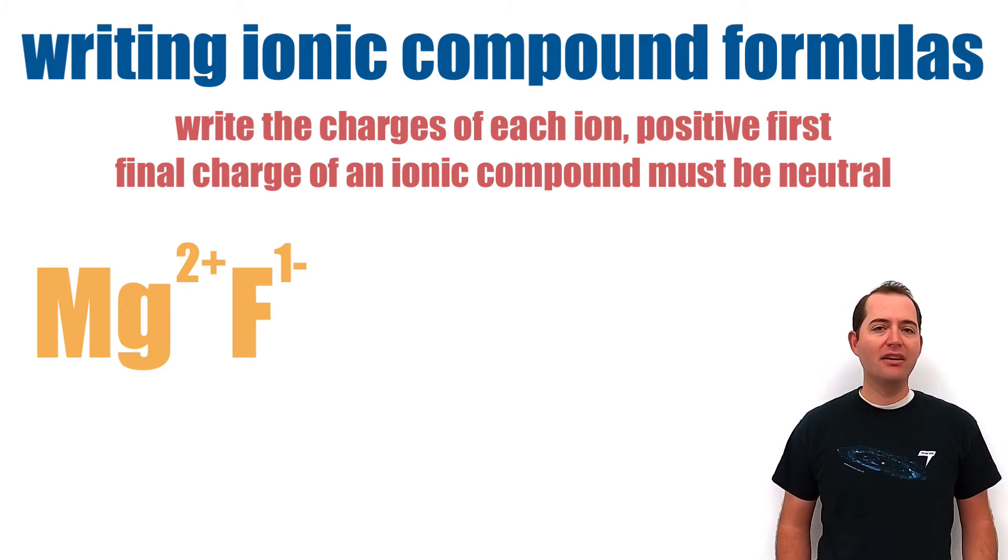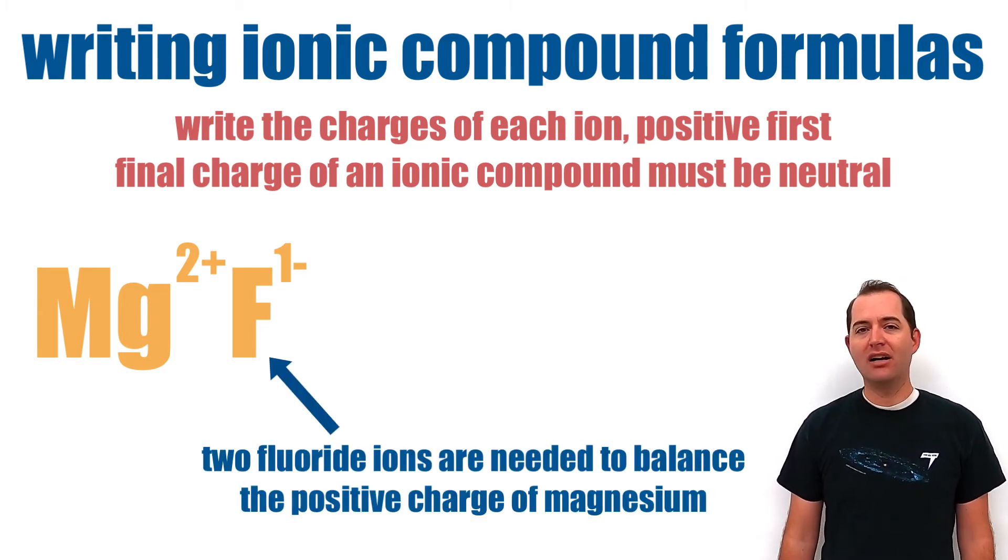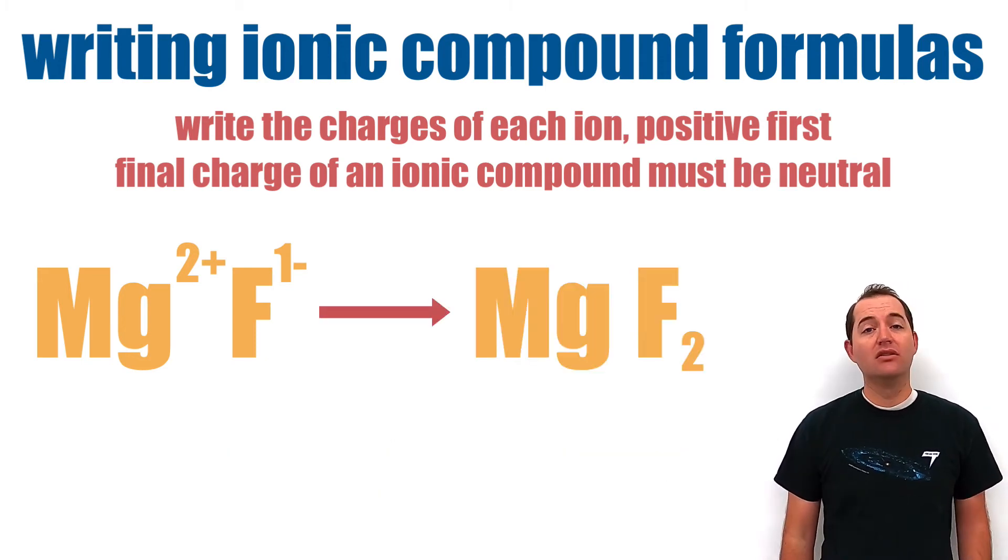This is done by changing the number of each ion in the compound so that the total final charge is zero. In this case, two negative 1 fluoride ions are needed to balance the positive 2 charge of magnesium. So the formula for magnesium fluoride would include one magnesium ion and two fluoride ions.